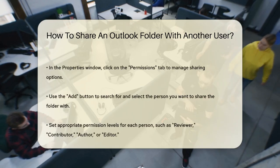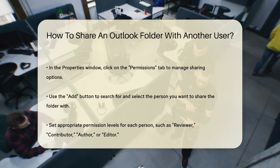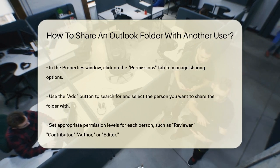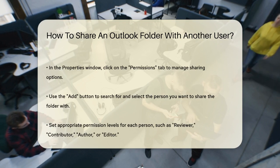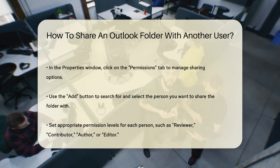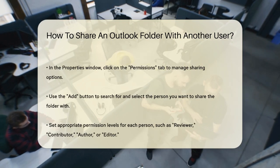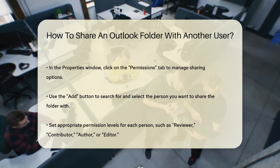In the Properties window, click on the Permissions tab. Here you can add the people you want to share the folder with. Click the Add button to search for the person's name or email address in your address book. Once you find them, double-click their entry or click the Add button to add them to the list.